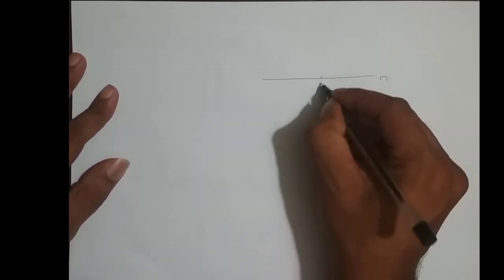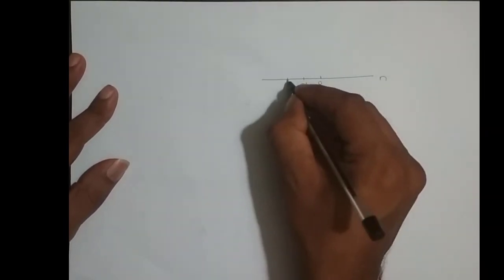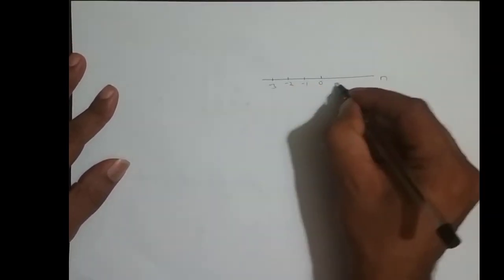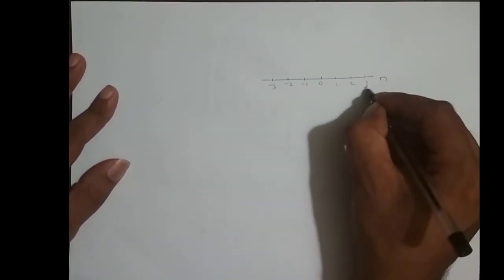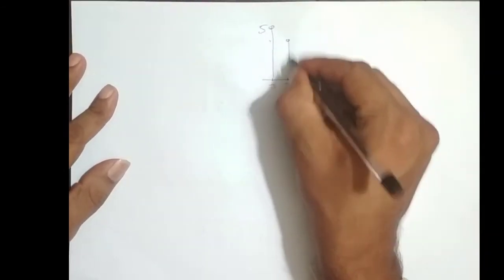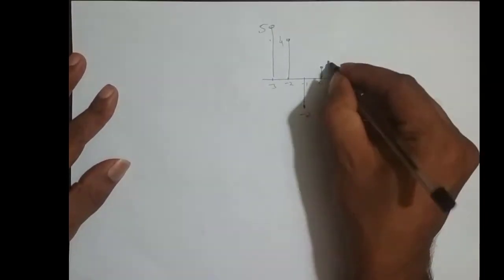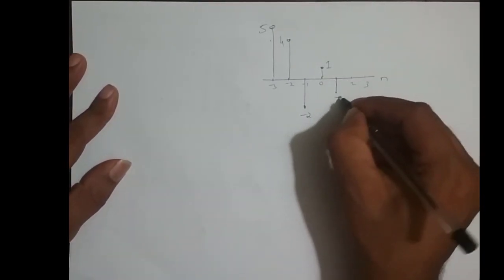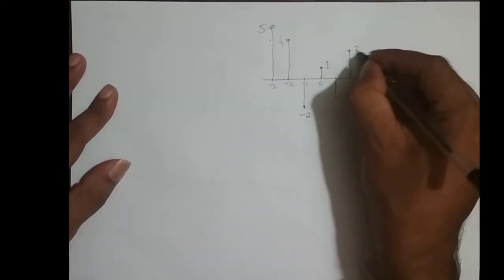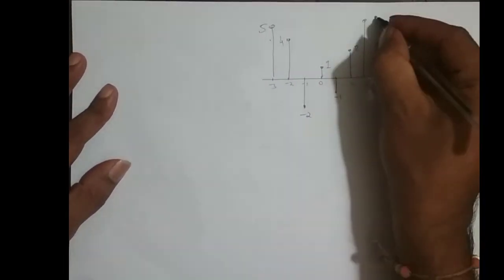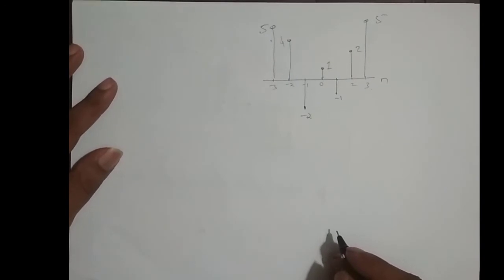Let me convince you with one more sequence. Say I have a sequence with values at n from minus 3 to 3: the values are 5, 4, minus 2, 1, minus 1, 2, and 5.